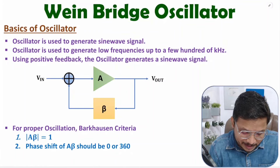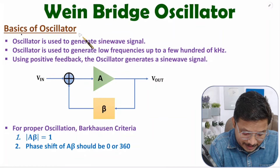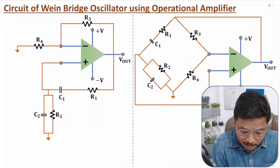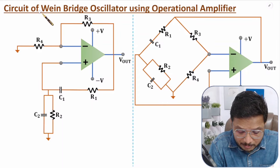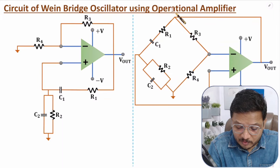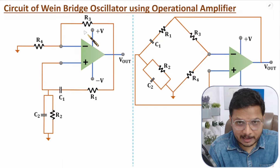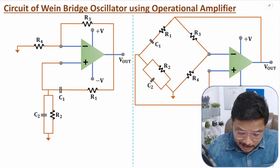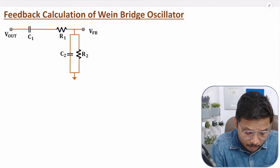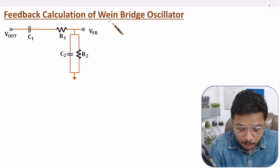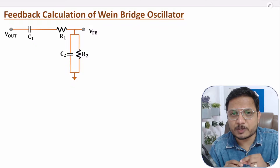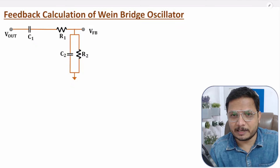First of all, I will explain the basics of oscillators. After that, I will explain the circuit diagram of the Wien Bridge oscillator using operational amplifier, including its working. At last, I will derive the feedback calculation for the Wien Bridge oscillator, and based on that feedback calculation, you can understand the complete design process.